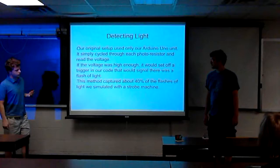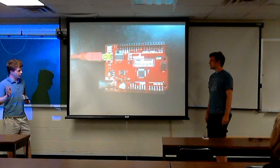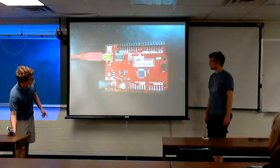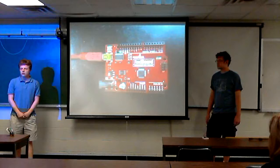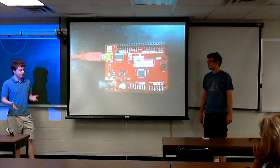So our original setup, we just used this single Arduino board. You can actually go on to the next slide. It's not an actual Arduino, but it's a very similar unit. And we used these six pins down there. And we pretty much just ran one photoresistor into each pin. So we were reading six photoresistors for our directionality. This method caught about 40% of flashes that we produced by a simulated strobe machine. So it was working kind of okay, but not really the way we wanted it to.